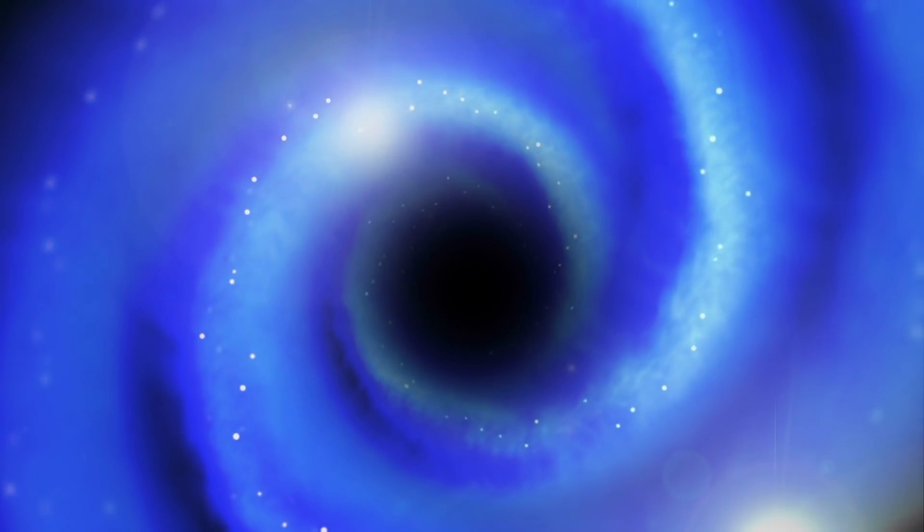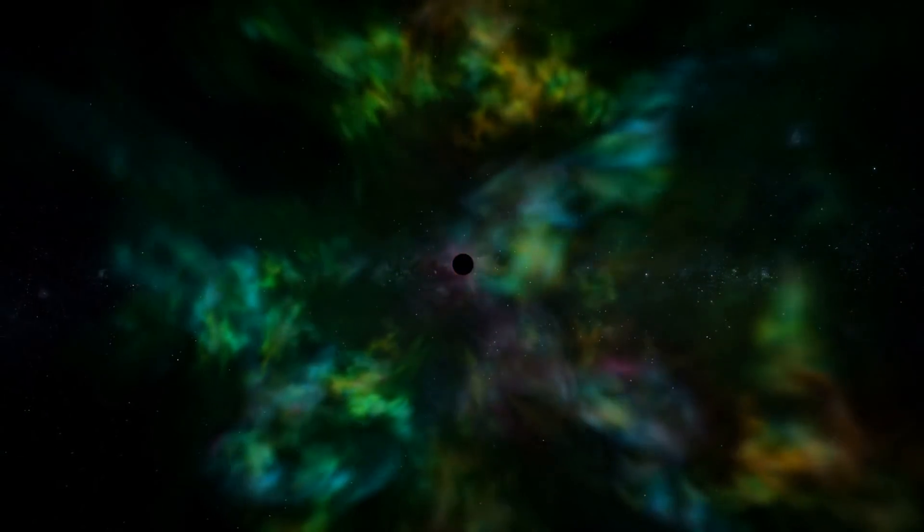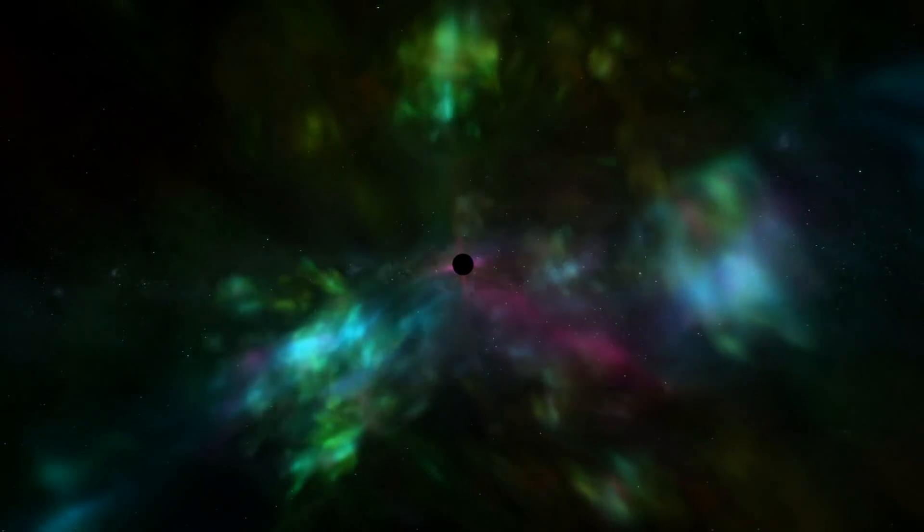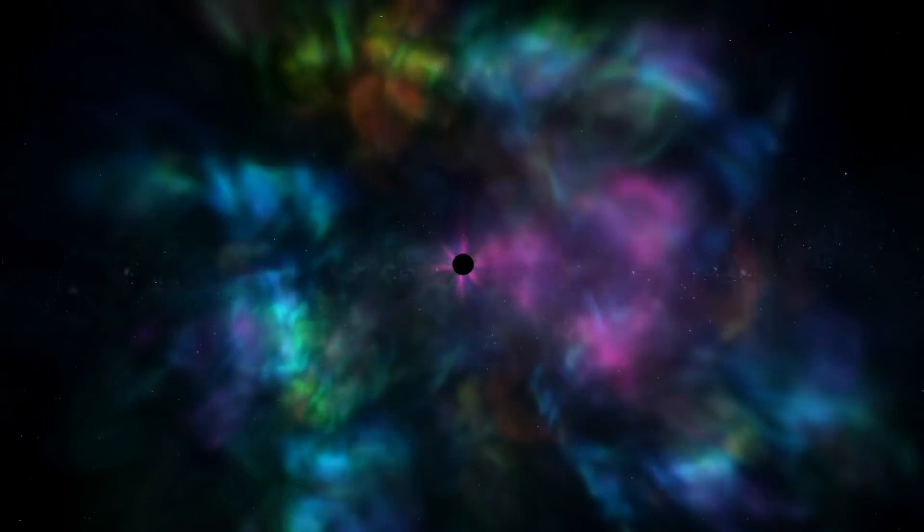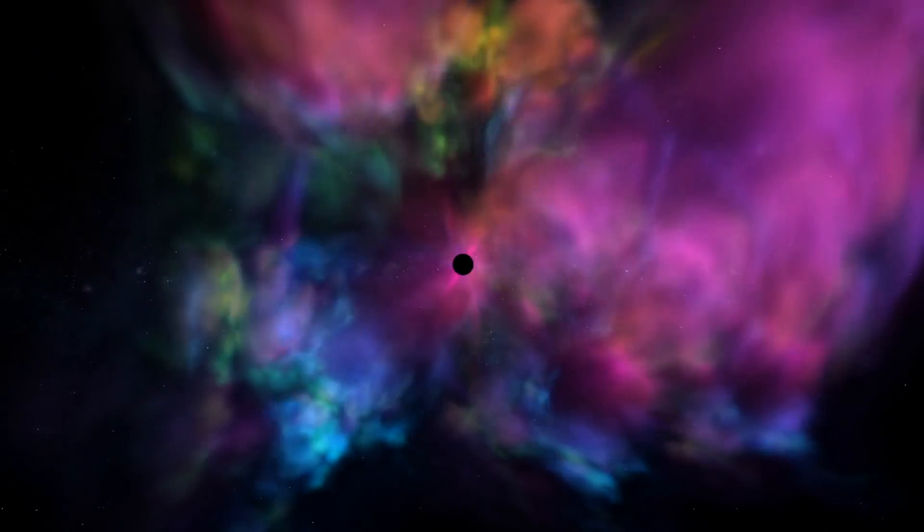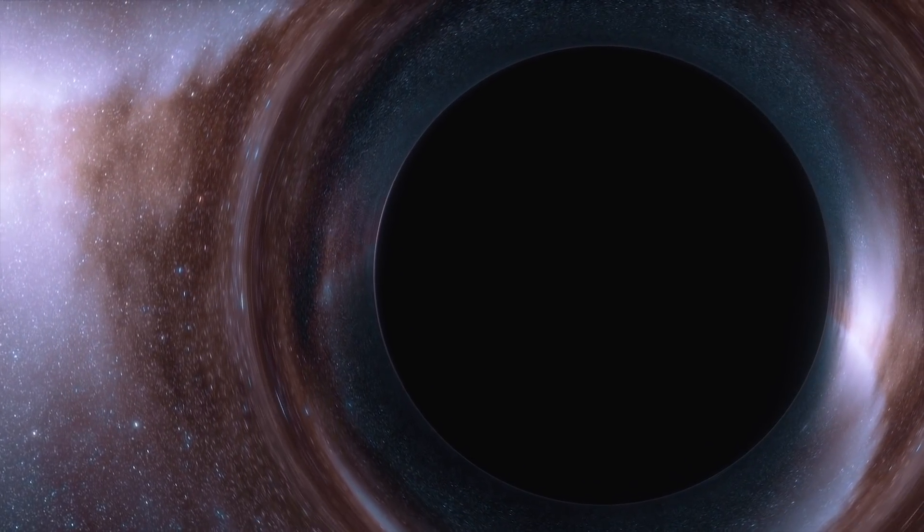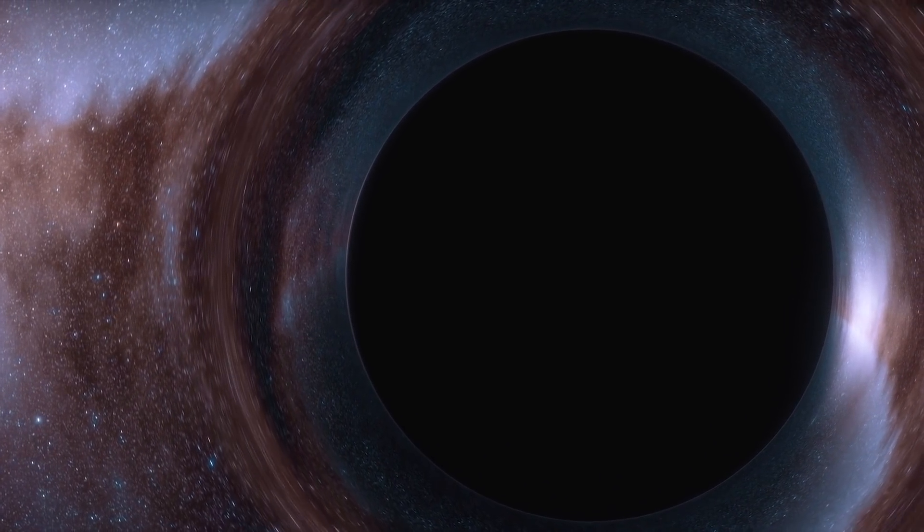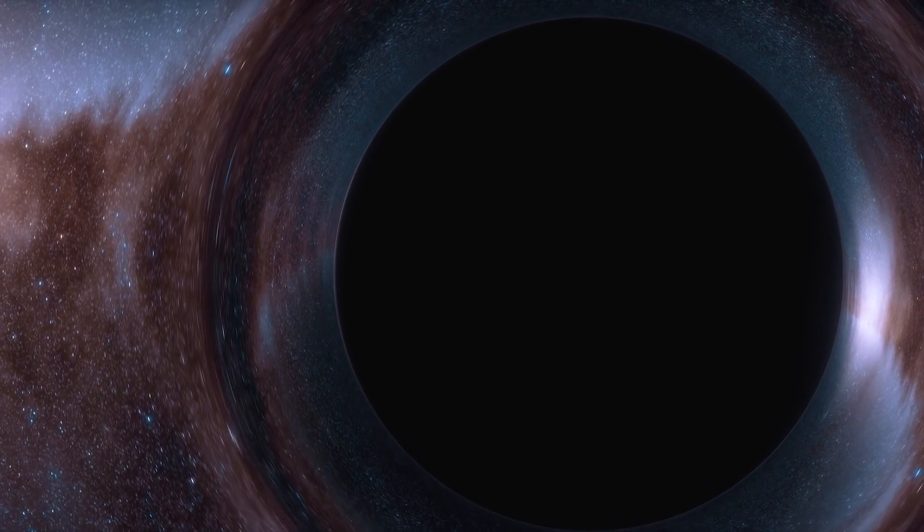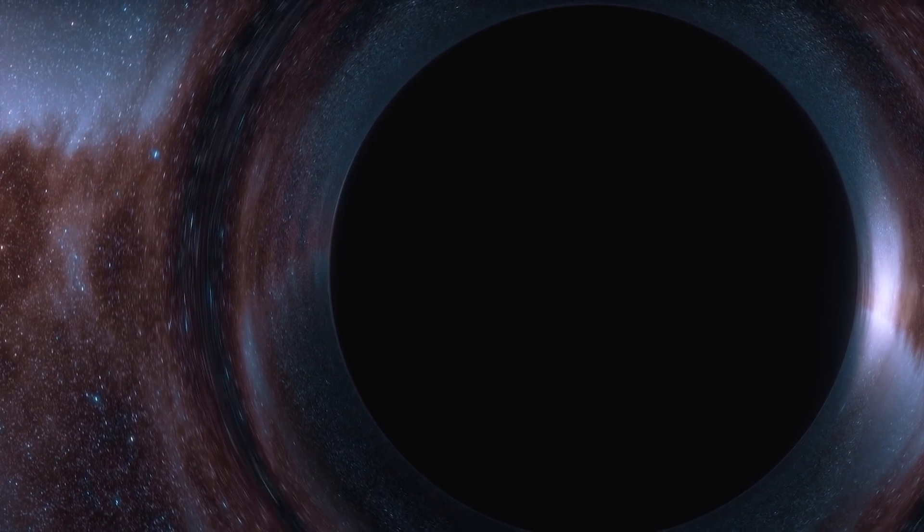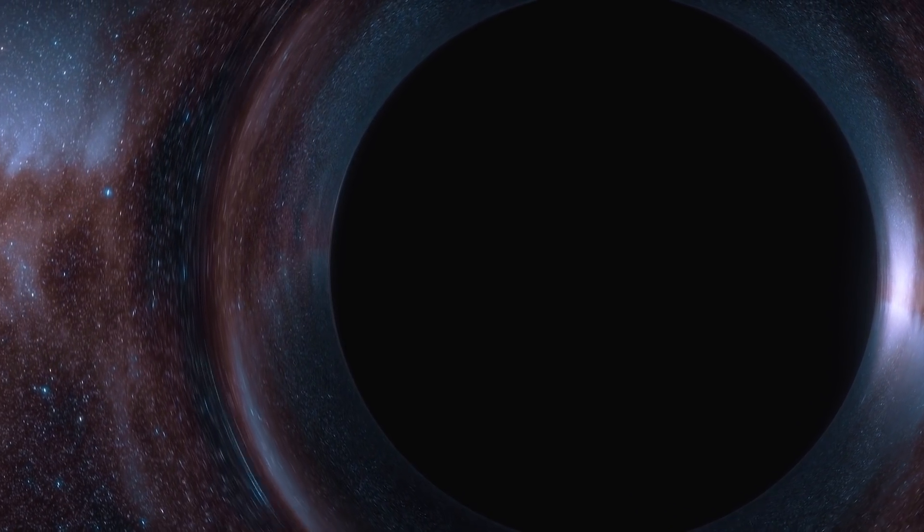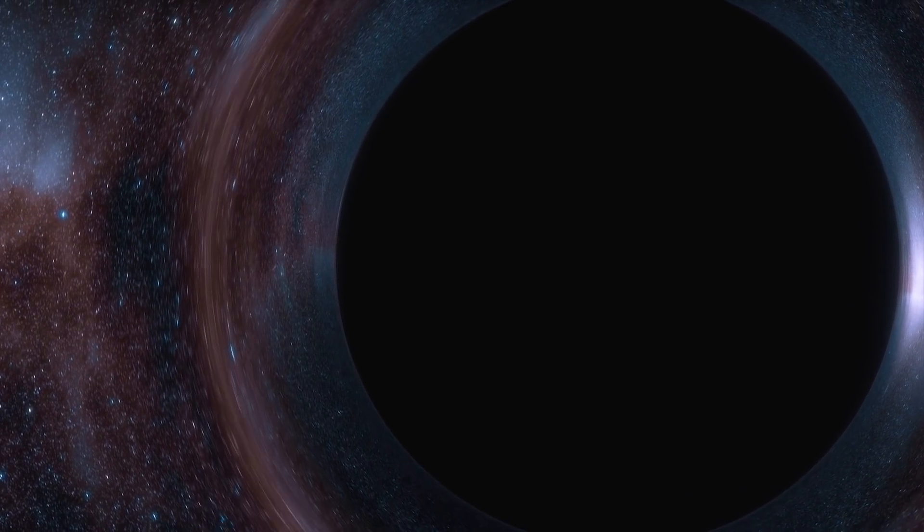Black holes contain a large amount of matter compacted into a small area. You can think of it as a star, ten times more massive than the sun, squeezed into a sphere approximately the diameter of New York City. Because the matter in a black hole is so dense, the force of gravity within the black hole becomes immensely strong, attracting everything within a certain radius and not even allowing light to escape.